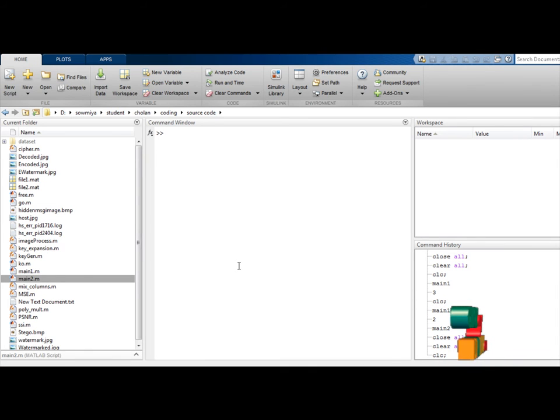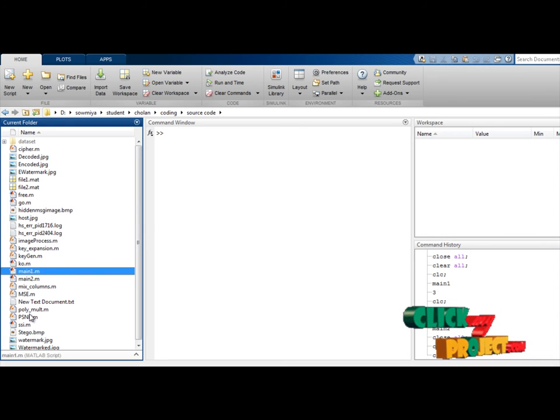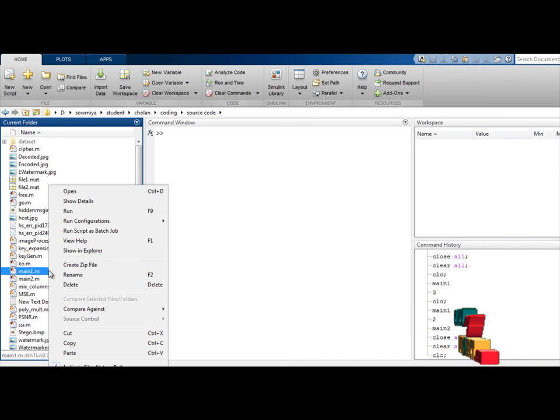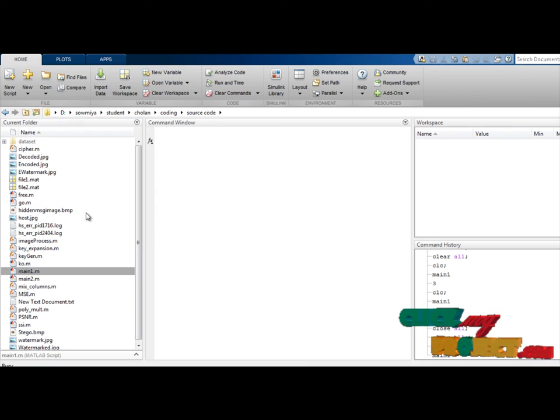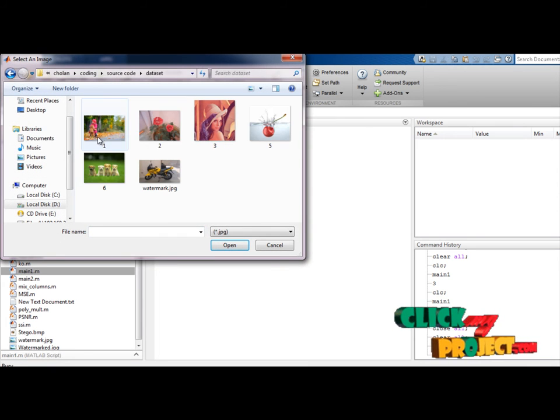Highly secure image steganography used to find the secret image. This is our source code. First you select main.m and run the file. Select any dataset. For example, I will select this one.